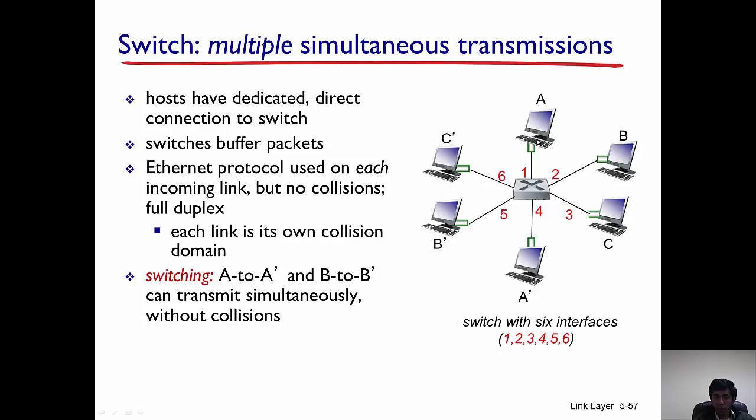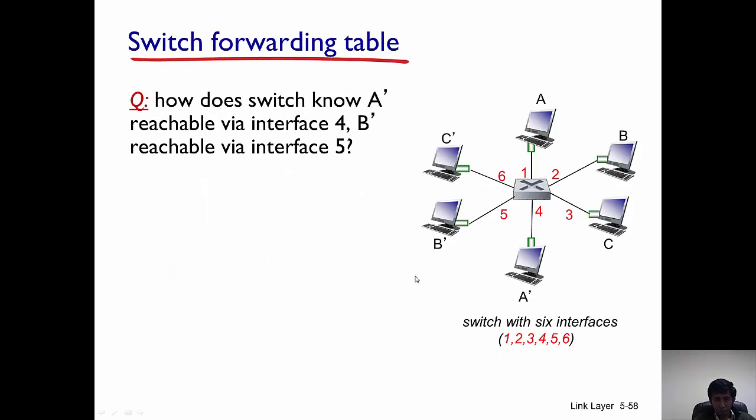What the switch can do is, because of its presence, it can allow multiple transmissions to take place simultaneously. That is, A and A' can send the frames to each other at the same time as B and B' without any collisions. So because of the presence of a switch, multiple simultaneous transmissions can take place at the same time without collisions.